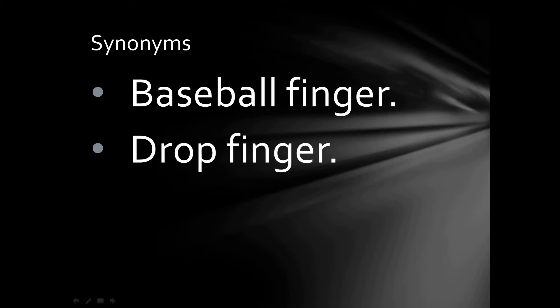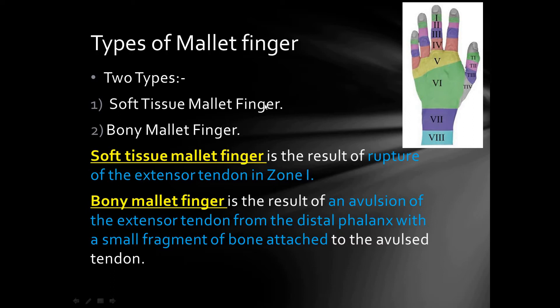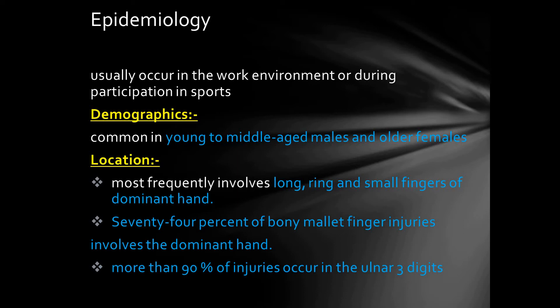The other names for mallet finger are baseball finger or drop finger. There are two types: soft tissue mallet finger, when there is disruption of the extensor tendon in zone 1, and bony mallet finger, when there is an avulsion fracture of the base of the distal phalanx.